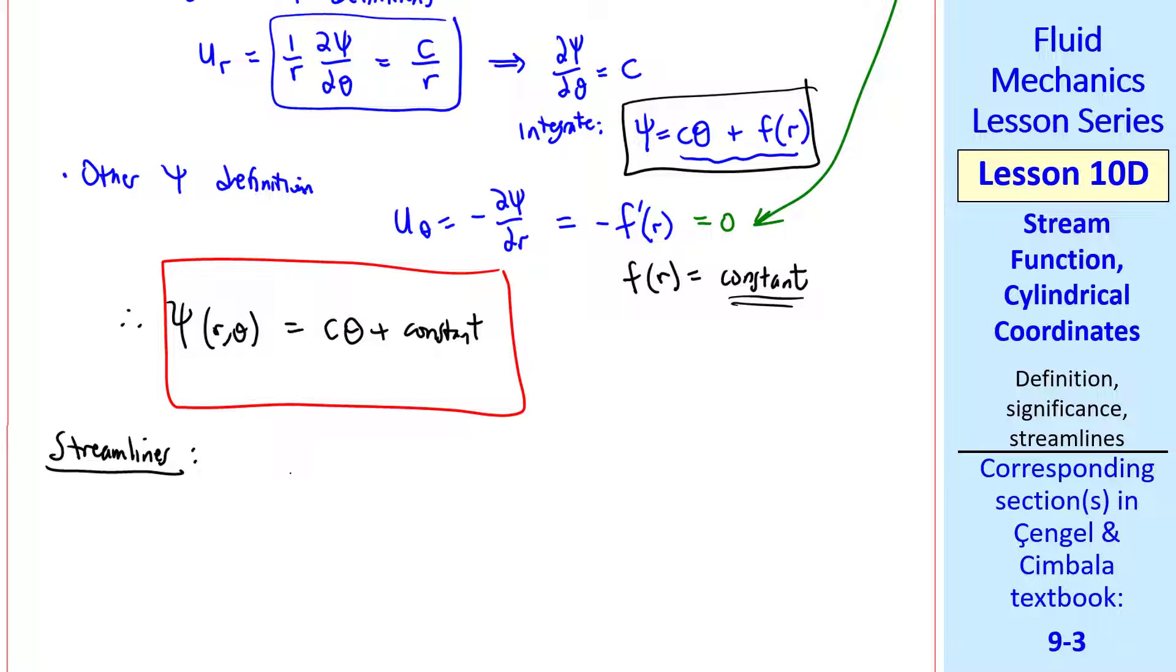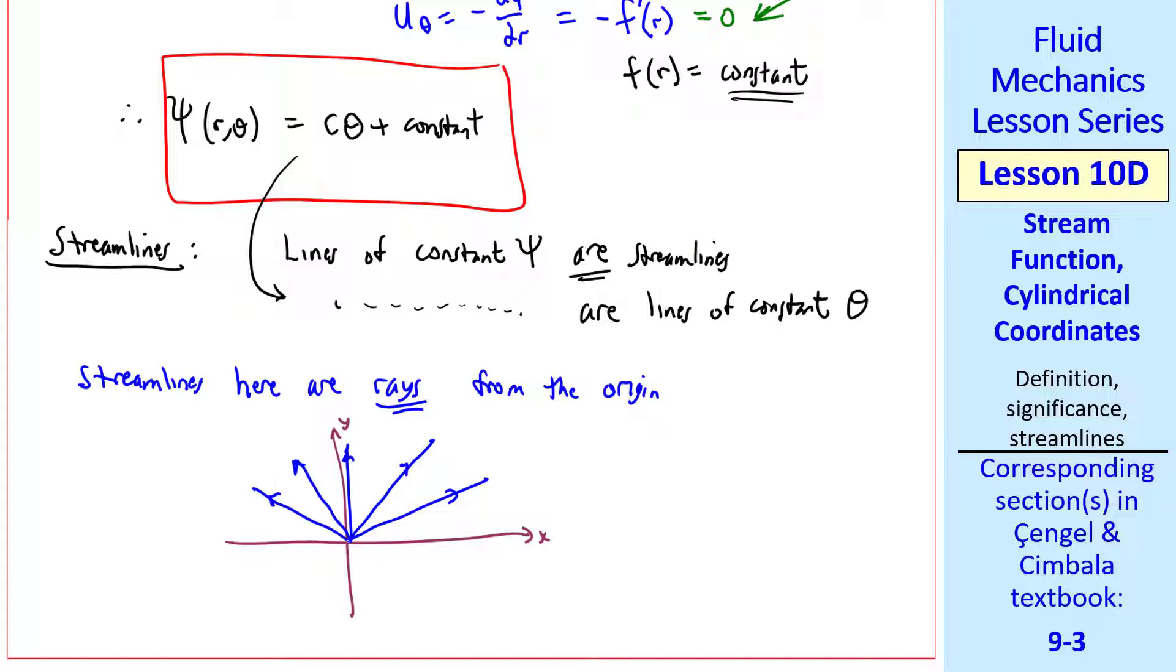What do the streamlines look like? Well, remember that lines of constant psi are streamlines in this flow. And from our equation, lines of constant psi are simply lines of constant theta. So for some value of theta, we get a value of psi. Pick a different value of theta, we get a different psi. The streamlines are rays emanating from the origin in all directions. We can label these streamlines psi_1, psi_2, etc. Where psi_1 would correspond to some theta_1, and psi_2 would correspond to some theta_2, etc.